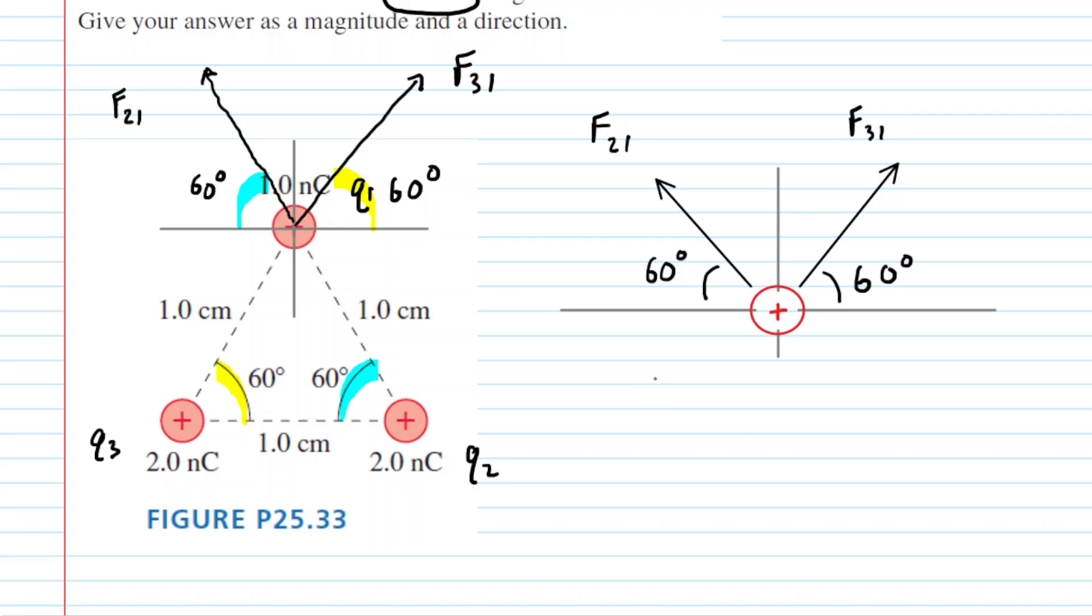Our next step is going to be to calculate the magnitude of each of those two forces. To calculate the magnitude of each of those forces, we're going to use Coulomb's law. In this chapter we're learning that the force between two charged particles is equal to a constant multiplied by the magnitude of charge on the first charge, multiplied by the magnitude of charge on the second charge, and then divided by the distance between those charges squared.